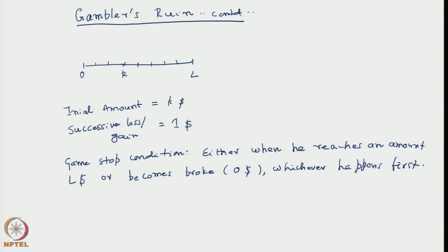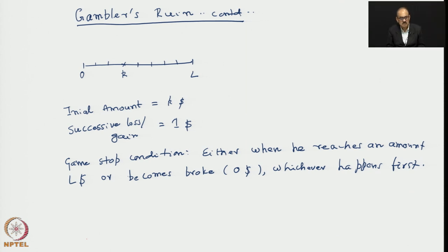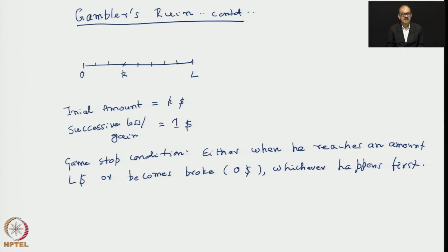To be specific, you may start with 10 dollars and your target amount could be 1000 dollars. He continues to play with a gain or loss of one dollar each. This is a lattice random walk problem where both 0 and L represent absorbers, because the game stops either when he reaches L dollars or becomes broke at 0. You can imagine it as a random motion of a particle in the presence of two absorbers.